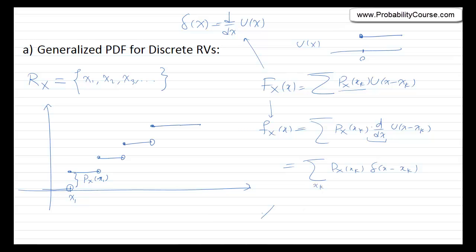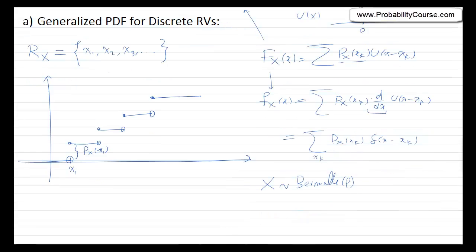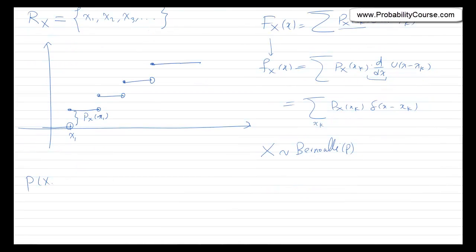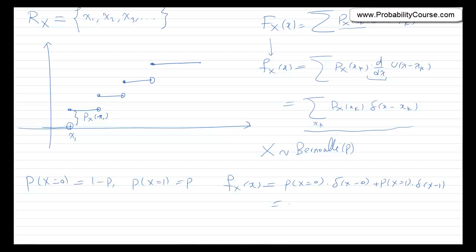For example, if X is a Bernoulli random variable with parameter p — meaning probability that X equals 0 is (1 minus p), and probability that X equals 1 is p — then the generalized PDF is: (1 minus p) times delta(x) plus p times delta(x minus 1). Let's see if this definition makes sense.